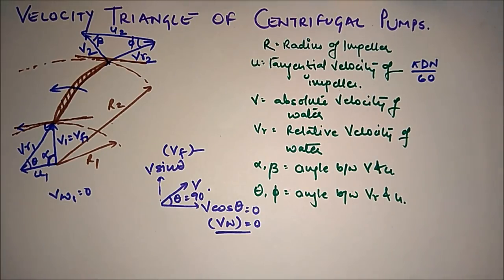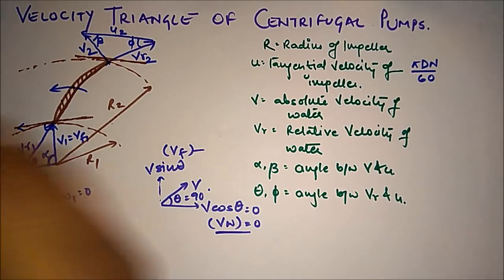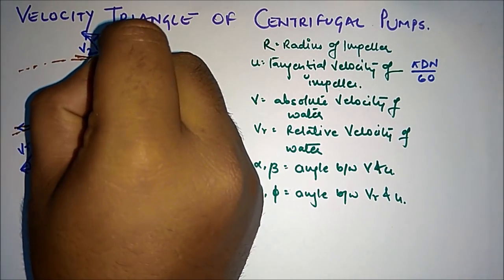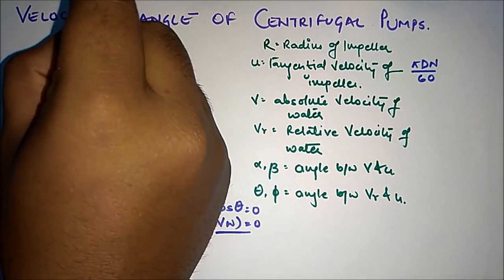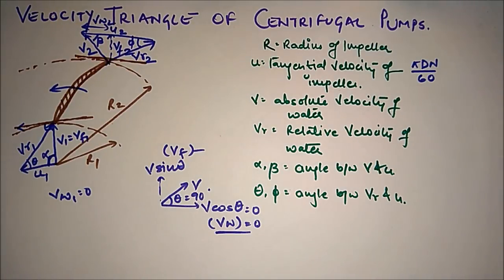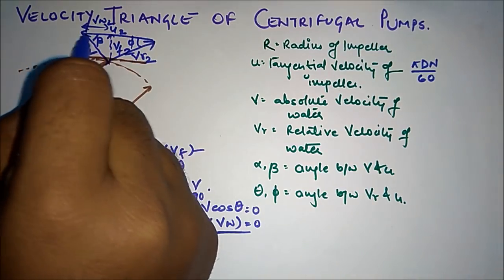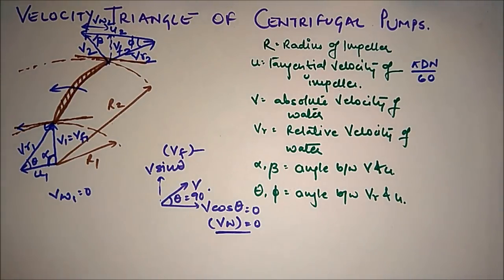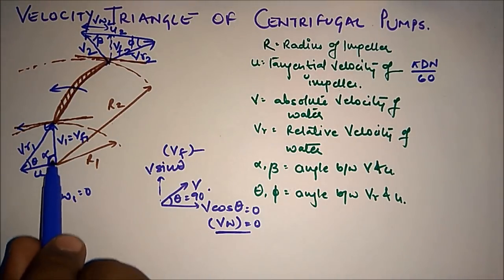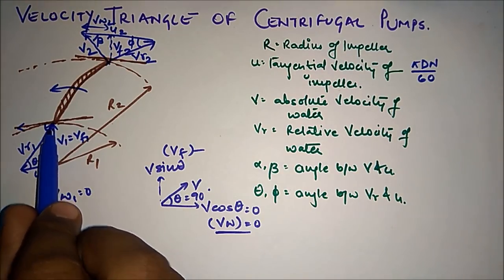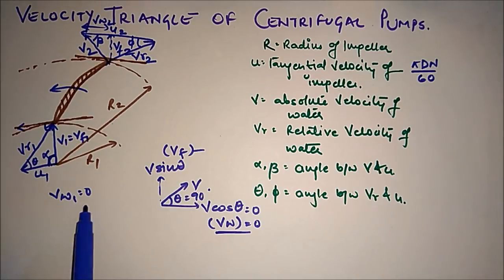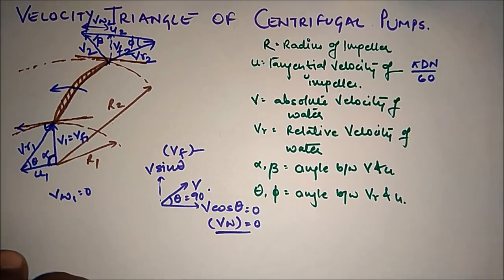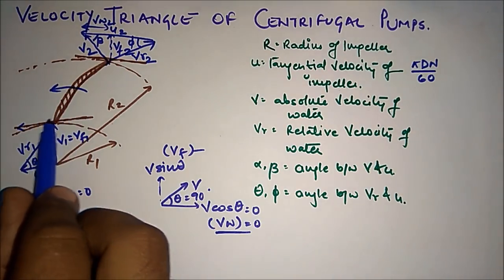At exit, V2 can be resolved into two components: Vf2, the vertical flow velocity, and Vw2, the horizontal whirl velocity. The full length up to here represents U2, the portion up to here is Vw2, the vertical part is Vf2, and this is Vr2. So at inlet, since water enters radially, it makes 90 degrees — no horizontal component, only Vf1 equals V1.